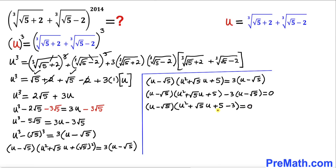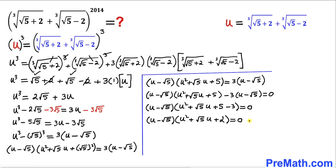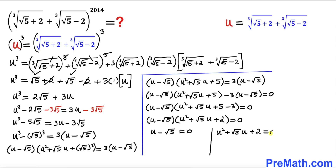Combining like terms, 5 − 3 = 2. So we have (u − √5)(u² + √5·u + 2) = 0. Separating the two factors: either u − √5 = 0, or u² + √5·u + 2 = 0.